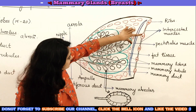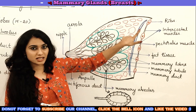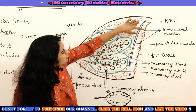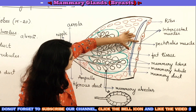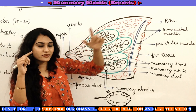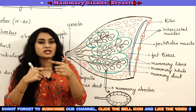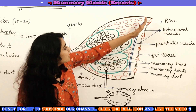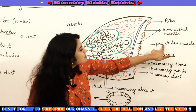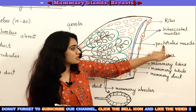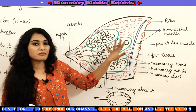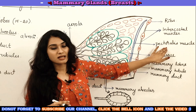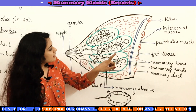In the diagram, the structures marked in red are the rib bones. The muscles connecting these ribs are called intercostal muscles. The structure marked in blue represents the pectoralis muscle. The breast or mammary gland is situated on top of this pectoralis muscle.